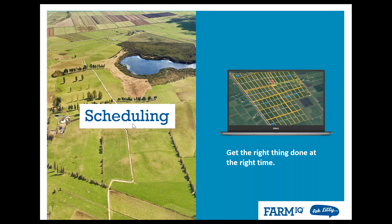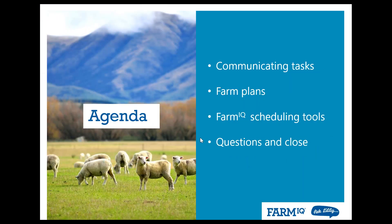Today we're going to be talking about scheduling — how we can use scheduling tools to make sure we get the right thing done at the right time. Our agenda: first we'll talk about communicating tasks — what are the jobs we need to do and when do they need to get done? Then we'll look at farm plans and how to pull those tasks into a usable schedule. After that we'll look at the tools in FarmIQ that can help us plan. And lastly we'll have time for questions.